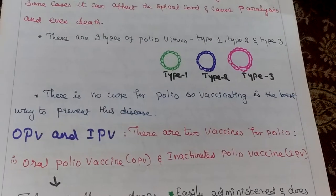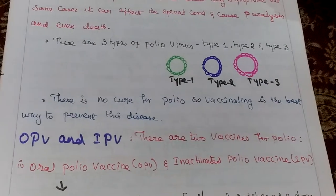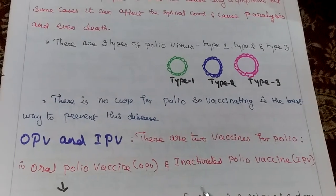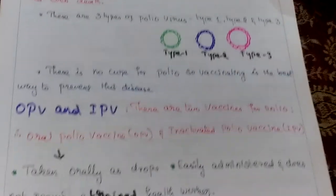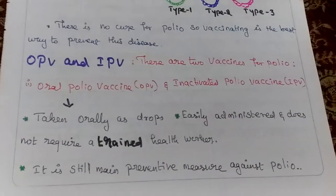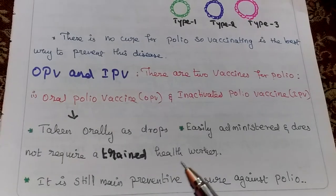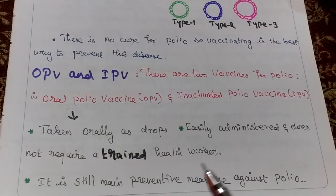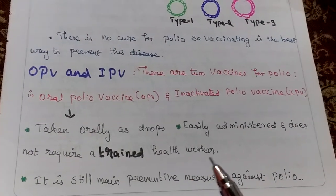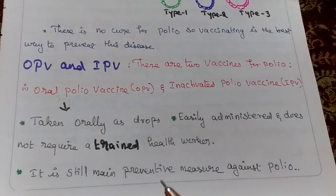Two types of vaccines are available: OPV — oral polio vaccine — and IPV — inactivated polio vaccine. Oral polio vaccine is taken orally as drops, easily administered, and does not require any trained health worker. It is still the main preventive measure against polio.